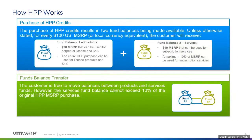The purchase of HPP credits results in two funds. For every $100 US dollars MSRP or local currency equivalent, the customer will receive one fund balance for products and another for services. The first fund balance, which is for products, includes a $90 MSRP that can be used for perpetual licenses and SNS. The entire HPP purchase can be used for licensed products and SNS. The second fund balance, which is for services, includes a maximum $10 MSRP that can be used for subscription services. The customer is free to move balances between the two funds; however, the services pool balance cannot exceed 10% of the original HPP MSRP purchase, or $10 in this example. The transfer of credits between funds is subject to an exchange ratio based on the underlying discounts in the customer's agreement.